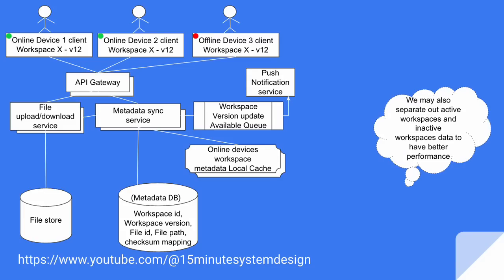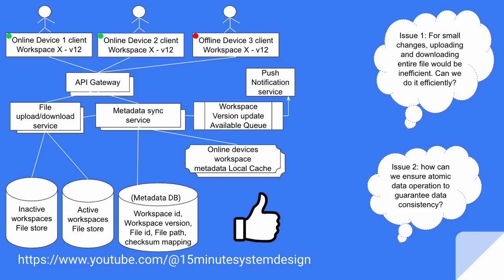We might want to separate out our active workspaces and inactive workspaces file store data to have better performance. So we have divided the entire database into two stores — one store having all active workspace file store data, while the other has the inactive workspace file store. At some particular point in time, when these inactive workspaces become active, let's say after three or four years, we might want to move this data to the active workspaces as well.